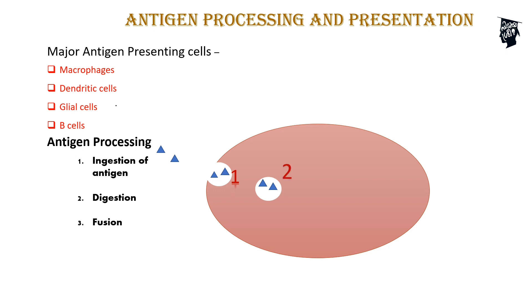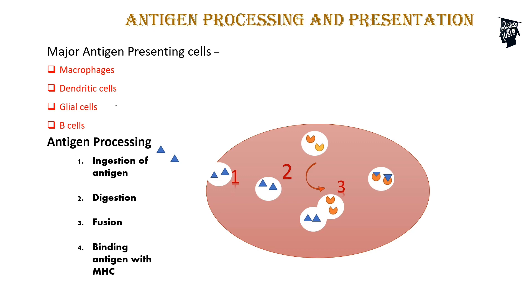The third step is fusion — the antigen presenting cells contain major histocompatibility complex vesicles, and these antigen-containing vesicles fuse together. The fourth step is binding of the antigen with MHC — MHC-antigen binding. The fifth step is exocytosis, where the MHC-antigen complexes remain attached to the antigen presenting cell surface.